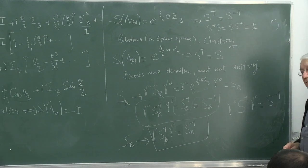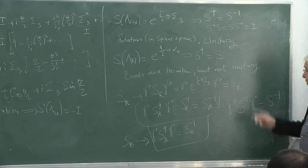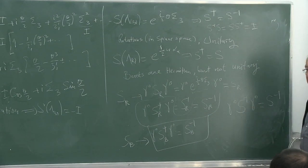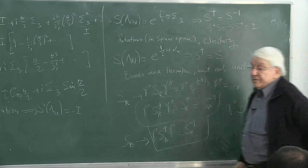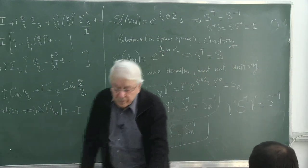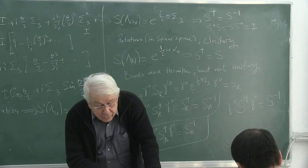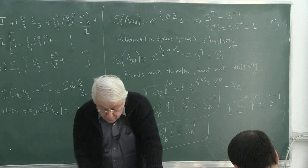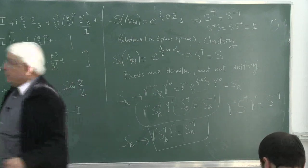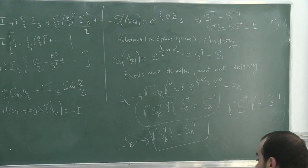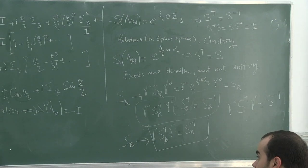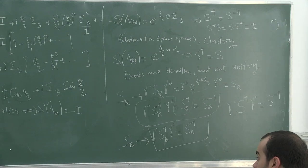I will call this, following Bjorken and Drell, generalized unitarity. It is not unitarity in the narrow sense, but unitarity in this generalized context. It's an important relationship and will play a crucial role in the definition of psi-bar. Let me define psi-bar and make use of this relationship.